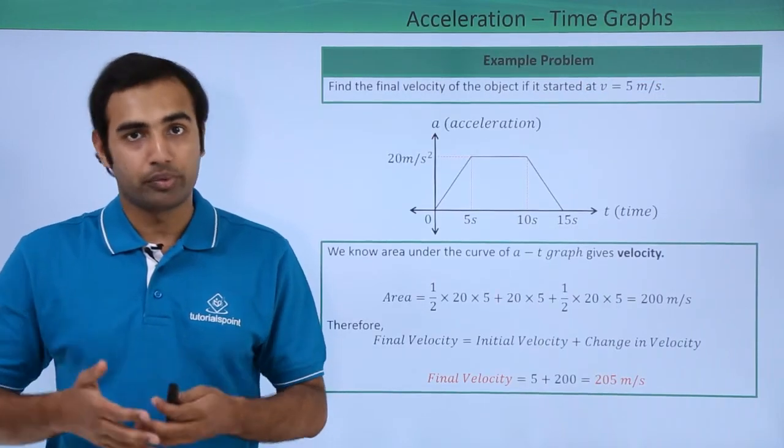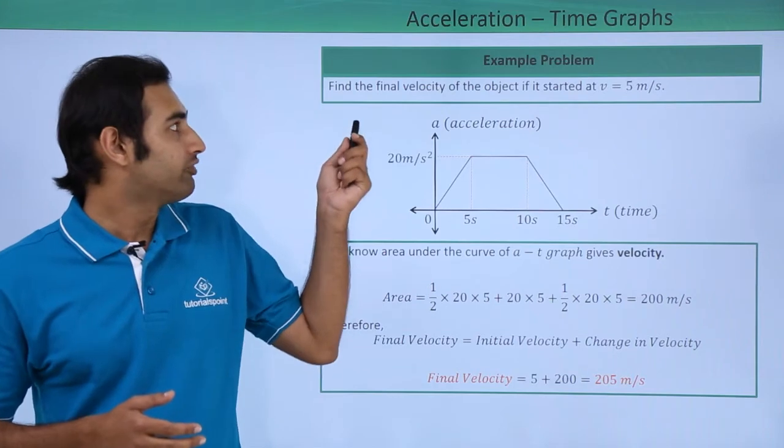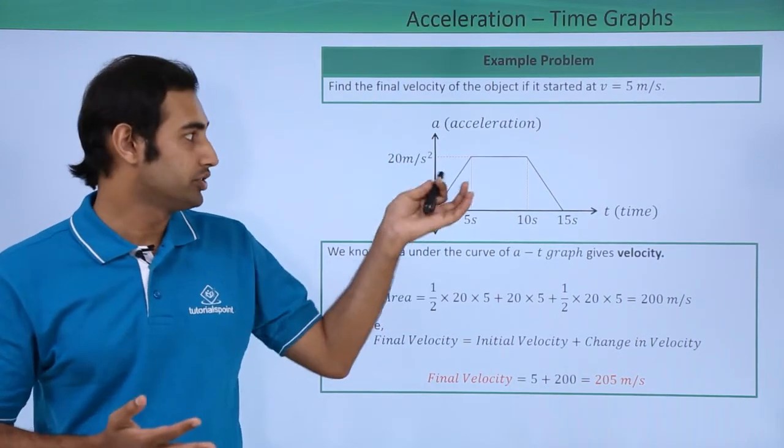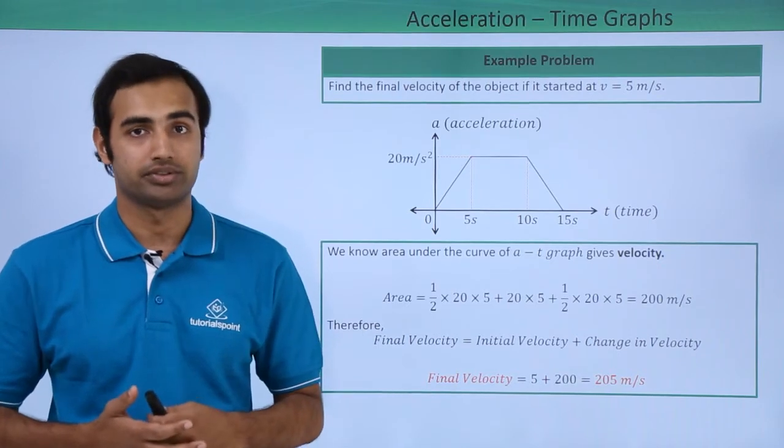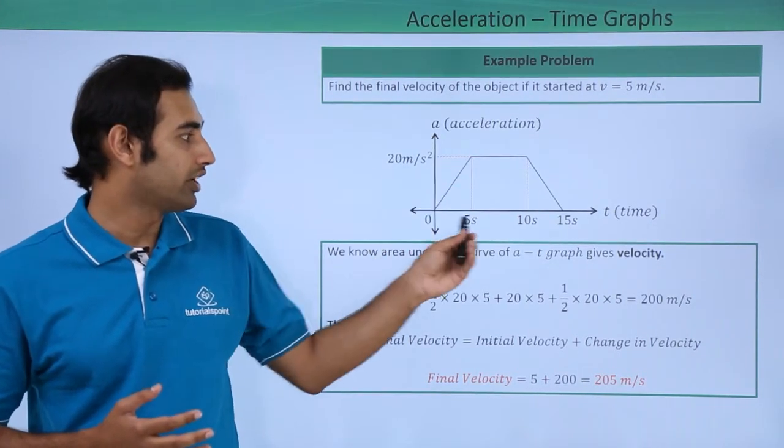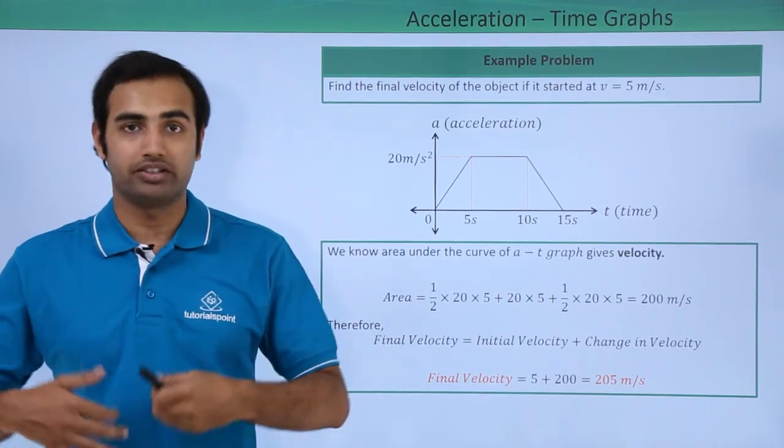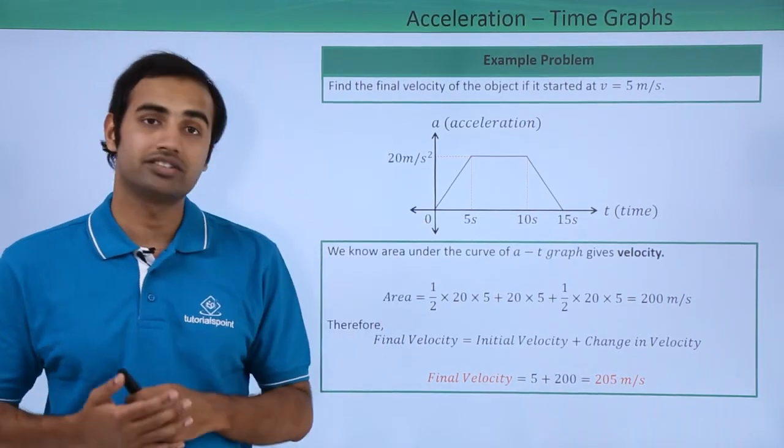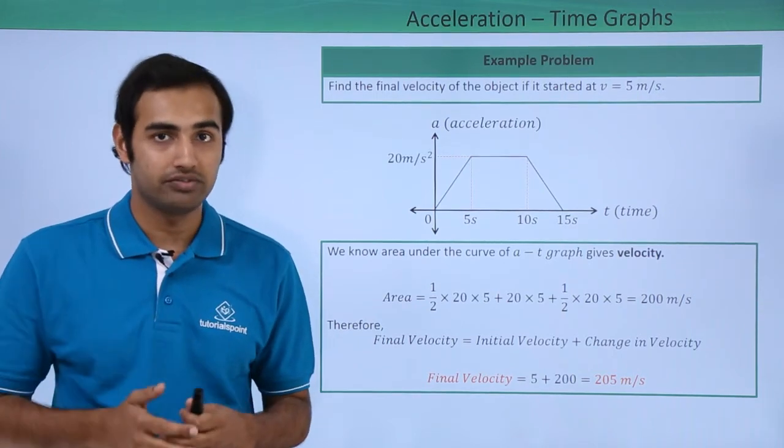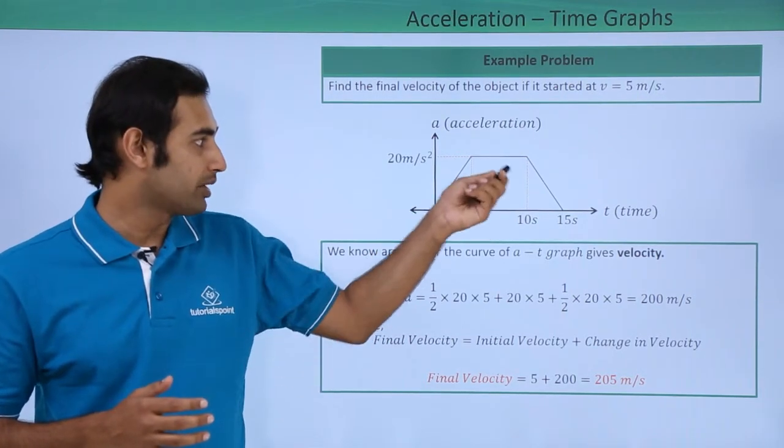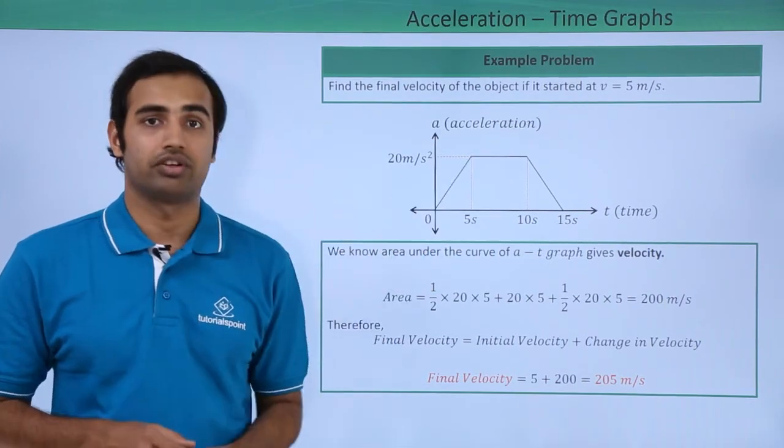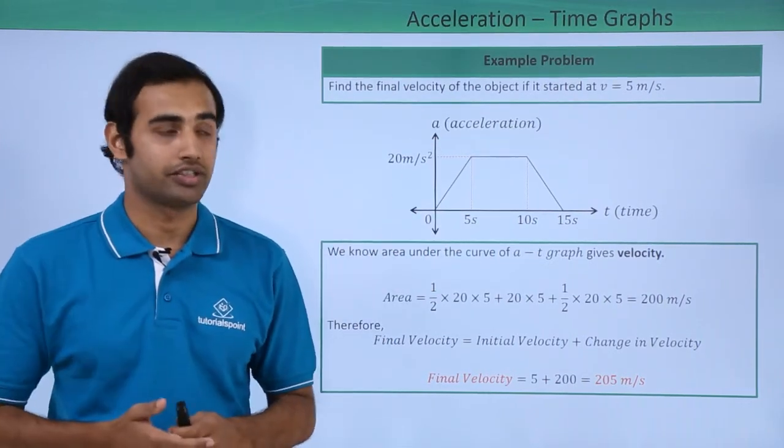Let's talk about AT graph through a problem. So we have to find final velocity of the object if it started at v equals 5 meters per second using this AT graph given to us. So you can see we have an AT graph which is drawn like this, all the values are mentioned. We are supposed to find the final velocity if initial velocity is given to me. Now I know that area under an AT graph gives us change in velocity, so area under this trapezium structure will give me the change in velocity, which I can add to the original velocity and I can obtain the final velocity.